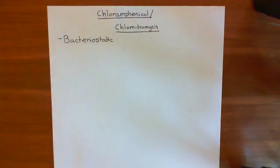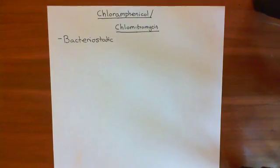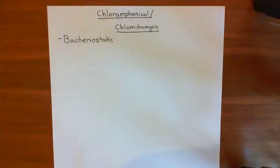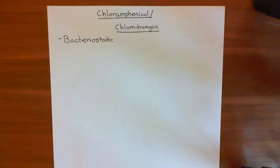We're going to see the mechanism by which chloramphenicol works. Basically, it's a protein synthesis inhibitor - it's going to stop the production of proteins. The way it stops production of proteins is by interacting with the ribosome and preventing translation of mRNA.